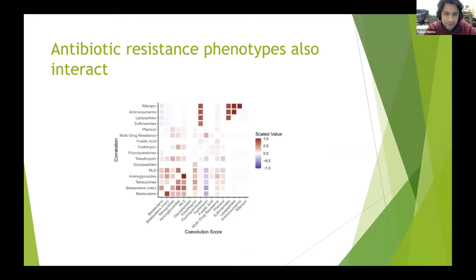You can also do this with any sort of binary trait, anything you can code with a one or a zero. For instance, here I applied this to predicted antibiotic resistance phenotypes instead of specific gene presence-absences in the same dataset. On the lower triangle of this correlation matrix is the co-evolution score you get using my method, and then the upper triangle here is just a straight-up correlation between the presence-absence vectors of these antibiotic resistance phenotypes. In general, most of these results, the patterns are mostly the same.